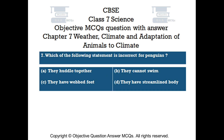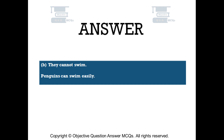Question number 7. Which of the following statements is incorrect for penguins? Option A — they huddle together. Option B — they cannot swim. Option C — they have webbed feet. Option D — they have a streamlined body. The right answer is Option B: they cannot swim. Penguins can swim easily.